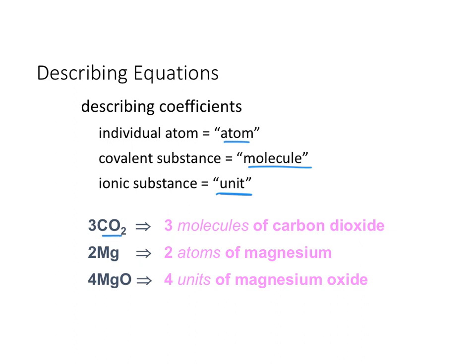So CO2 is a covalent molecule — if there are three of them, that's three molecules of carbon dioxide. Magnesium is just an element by itself, so two atoms of magnesium. MgO is an ionic compound, so four units of magnesium oxide. Make sure you're using the correct terminology when writing out your word forms.